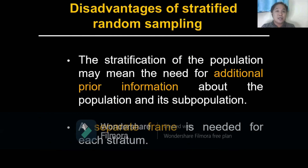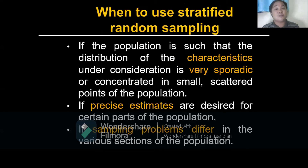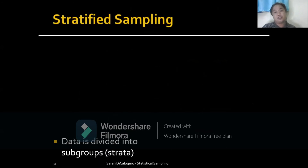When to use stratified random sampling: if the distribution of the characteristics under consideration is very sporadic or concentrated in small scattered points of the population; if precise estimates are desired for certain parts of the population; and if sampling problems differ in various sections of the population.